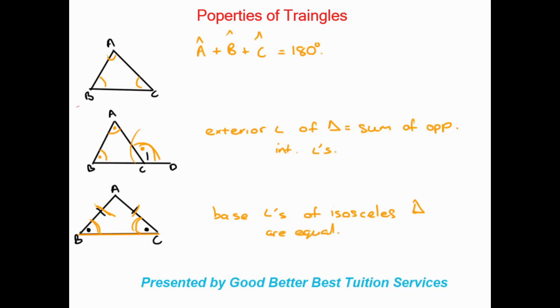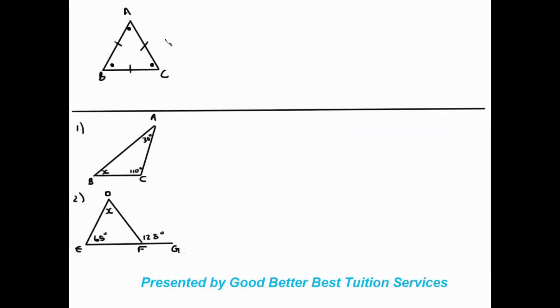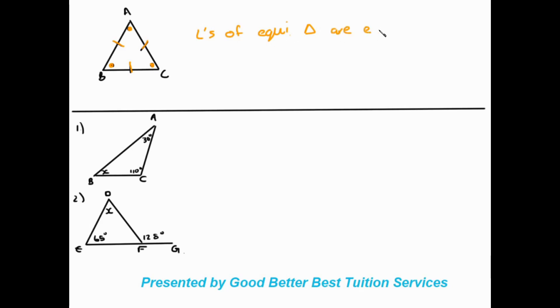Here we have a triangle with three equal sides — the equilateral triangle. As well as all three sides being the same, in an equilateral triangle all three angles are also equal.